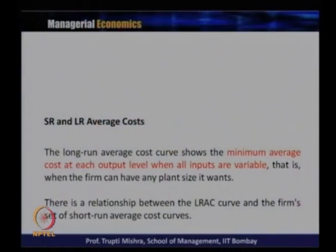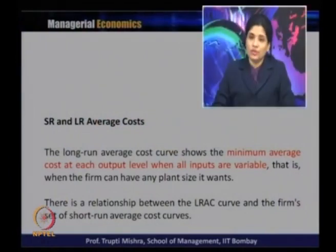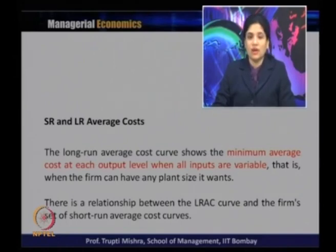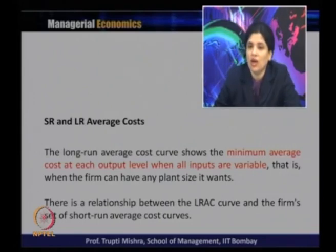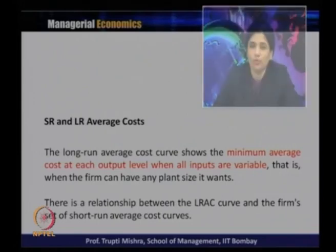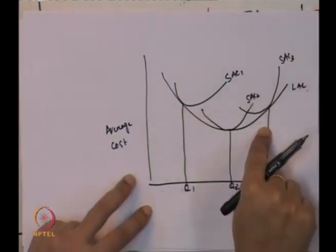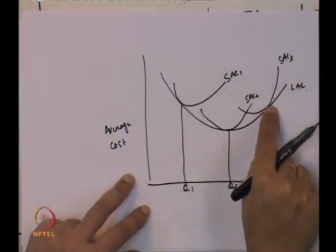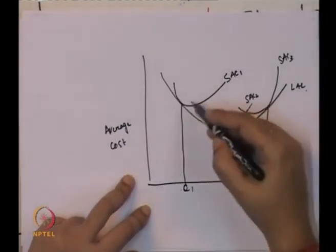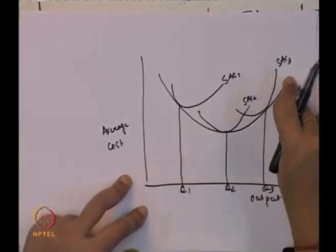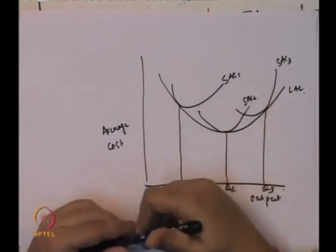The long run average cost curve shows the minimum average cost at each level of output when inputs are variable — that is, when a firm can have any plant size it wants. The long run average cost curve takes the minimum average cost at each short run output level, giving the minimum average cost at each output level when at least some inputs are variable.